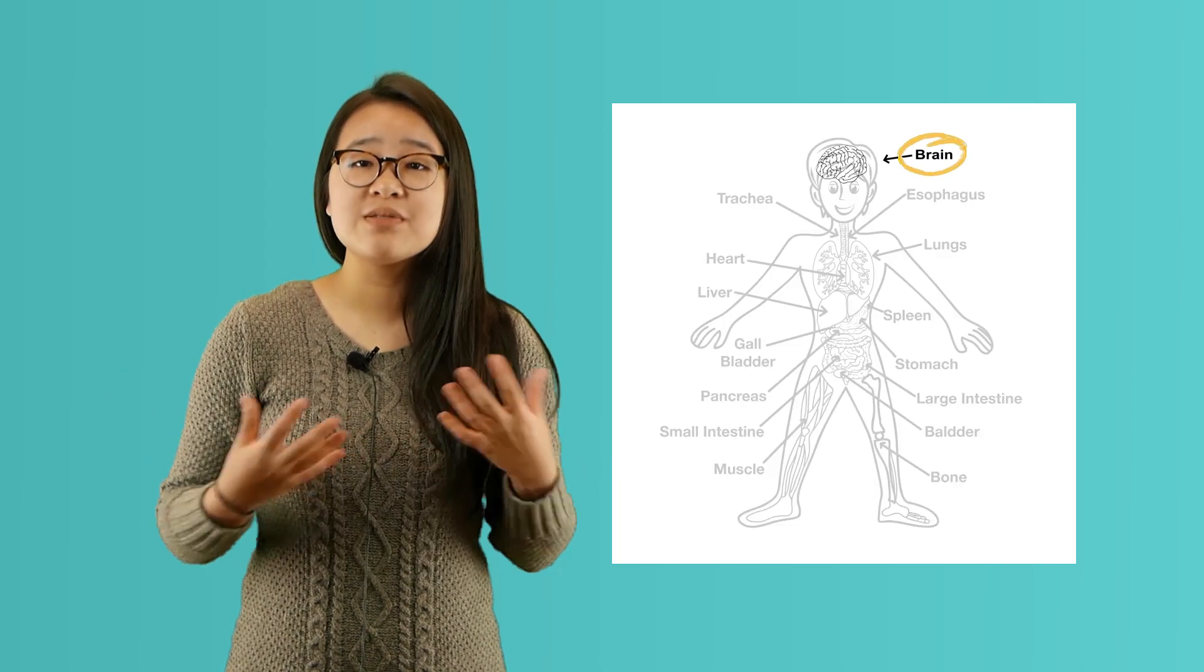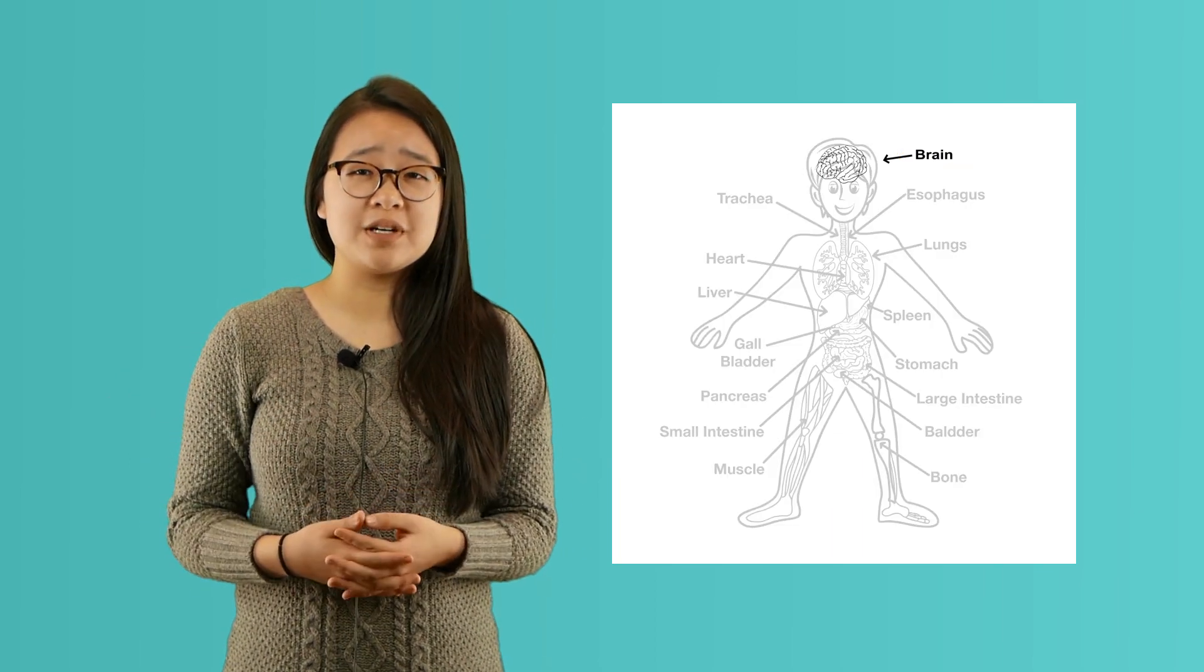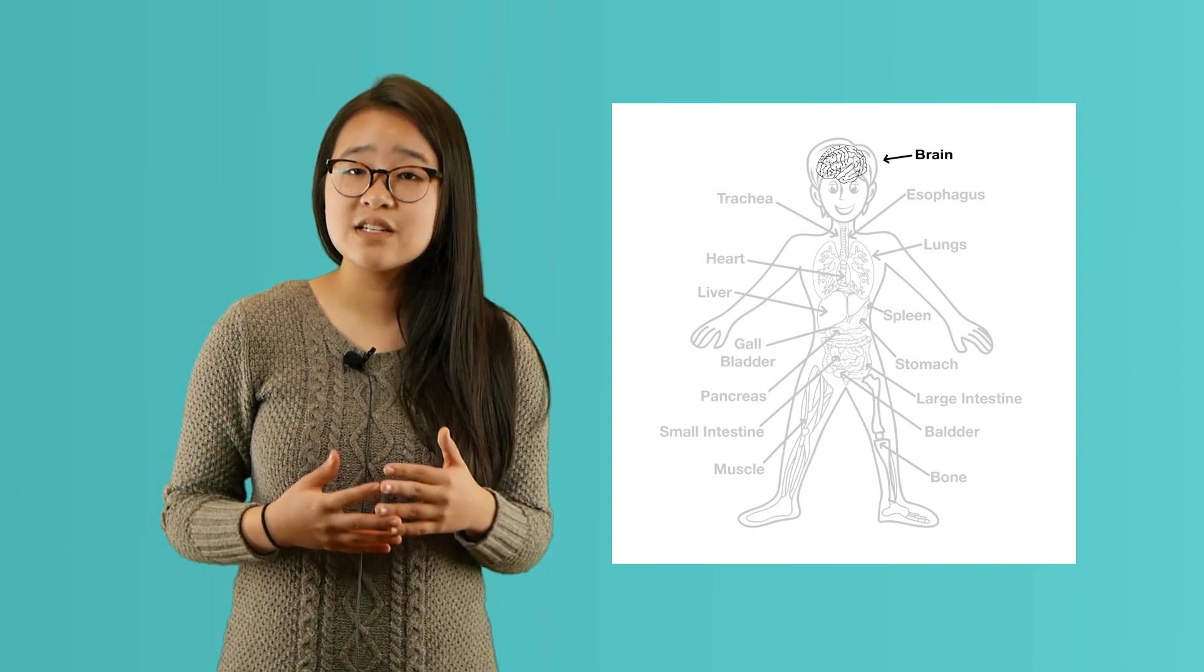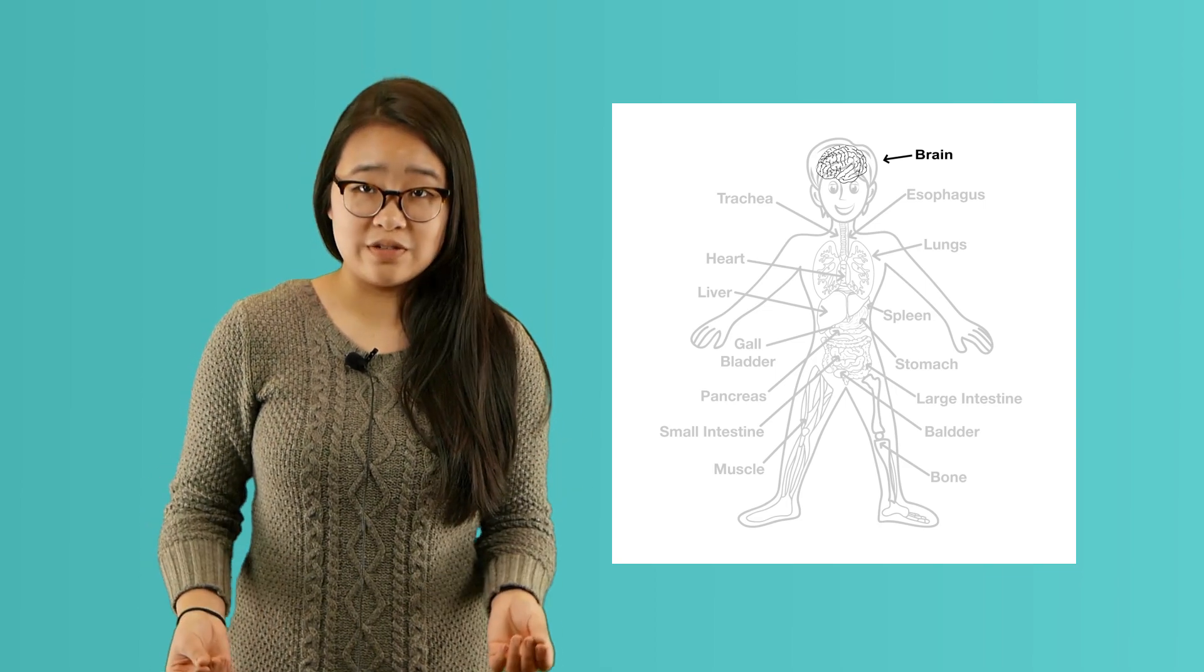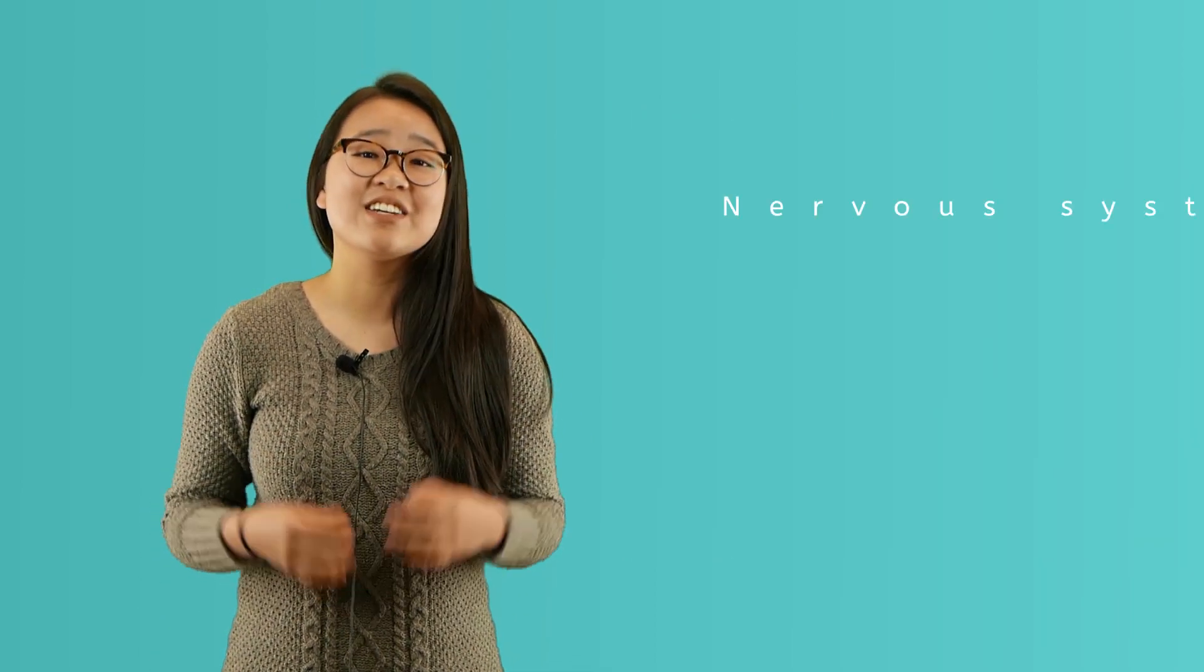Your brain is sort of like a very powerful computer. It controls your whole body and sends signals to your muscles through nerves. We call this your nervous system.